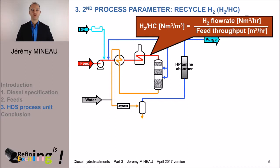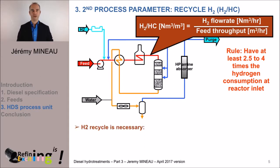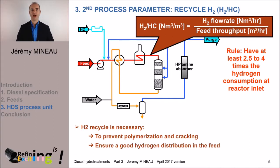The desulphurization increases if the partial pressure in hydrogen increases, and reversely. The second main operating parameter is the recycled hydrogen rate. This recycle is defined by the total quantity of hydrogen recycled towards the feed in normal cubic meters per hour of pure hydrogen divided by the total feed volumetric flow at ambient temperature. The state-of-the-art rule is to have between 2.5 and 4 times the total hydrogen consumption at reactor inlet, to avoid the phenomenon of hydrogen starvation — meaning to avoid running locally out of hydrogen. This hydrogen recycle is also necessary to avoid cracking and excessive polymerization, and to ensure a good distribution of hydrogen in the feed. This hydrogen recycle also favors desulphurization, just like the hydrogen partial pressure does.